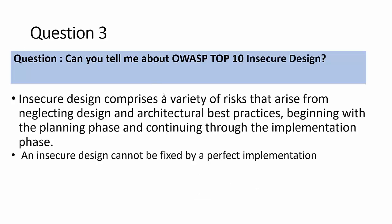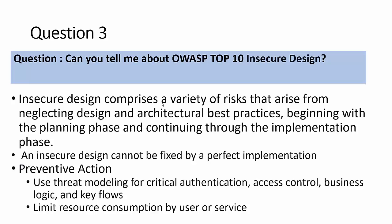Countermeasures for insecure design: use threat modeling in the design phase — agree on requirements with the customer, design the entire data flow diagram, and identify possible threats early so they can be addressed during development. Second, limit resource consumption. Insecure design is not caused by a technical flaw but by planning failure — developers failing to review code properly or add proper security during development.